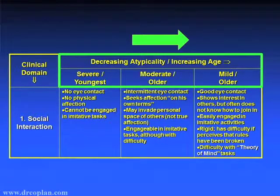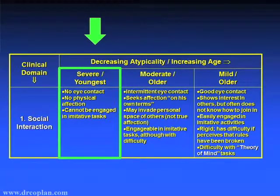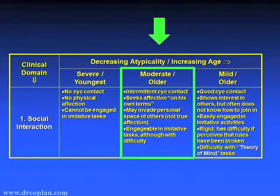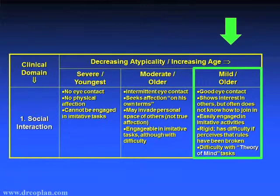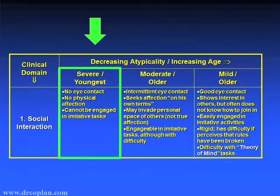Not everybody starts at the far left. Some people, even at their youngest when most severely affected, may start out somewhere in the middle. But the general progression in the social domain at the severest or youngest end is to have no eye contact, no physical affection, and the child can't be engaged in imitative tasks at all.